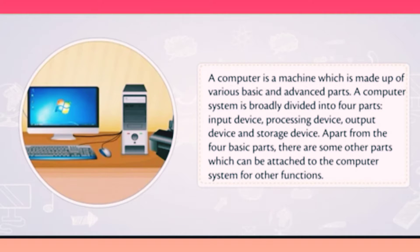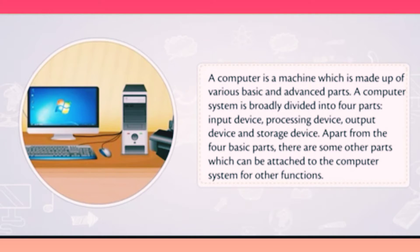A computer system is broadly divided into four parts: input device, processing device, output device, and storage device. Apart from these four basic parts, there are some other parts which can be attached to the computer system for other functions.